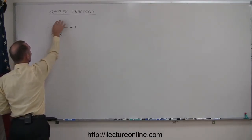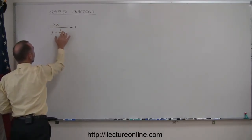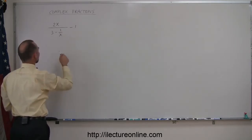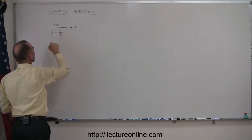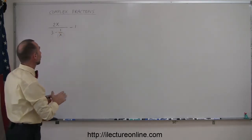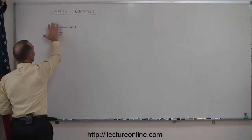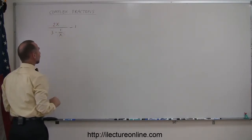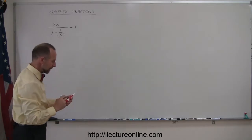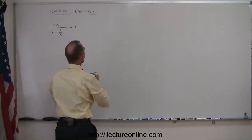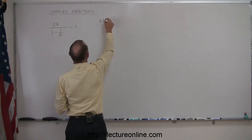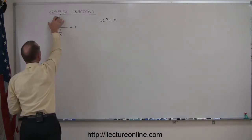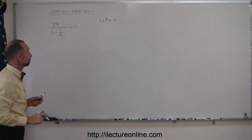The numerator of this fraction has no fraction, but there's a single fraction in the denominator, and the denominator is x. So what I'm thinking about is, for this complex fraction right here, there's one fraction that has a denominator x, and I call that the lowest common denominator. So my LCD is indeed equal to x.